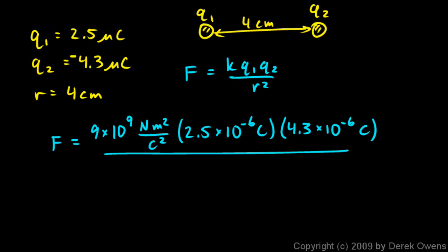So this is K Q1 Q2, and we divide all this by R squared. R is 0.04 meters squared. The units cancel out—the Coulombs squared down here cancels with these Coulombs, and the meters squared cancels with meters there. Then you put all this in the calculator: 9 times 10 to the ninth times 2.5 times 10 to the negative sixth times 4.3 times 10 to the negative sixth, divided by 0.04 squared. Don't forget to square the 0.04—it's a very common mistake to just forget to square that. This comes out to about 60 Newtons.